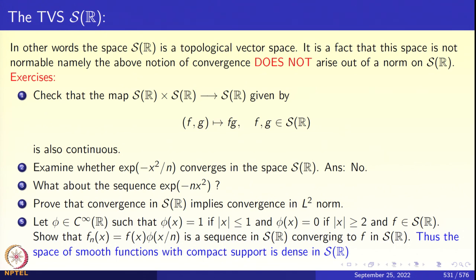A few exercises. The second exercise: I have a sequence e^(−x²/n). Examine whether this sequence converges in S(R). The answer is no. Convergence in S(R) means F_n converges to F uniformly, derivatives also converge uniformly, and this persists after multiplication by x^k. Where does e^(−x²/n) converge as n goes to infinity? It converges pointwise to the constant function 1. Unfortunately, the constant function 1 is not in S(R), so e^(−x²/n) does not converge in this space.